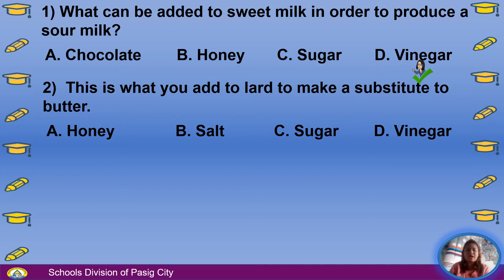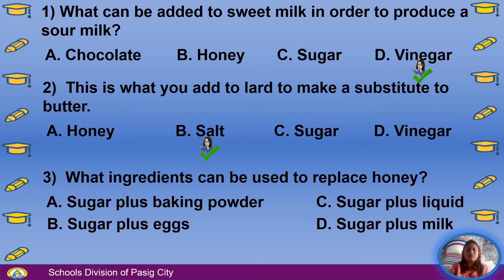Number 2: This is what you add to lard to make a substitute to butter. A. Honey, B. Salt, C. Sugar, D. Vinegar. The answer is B, Salt.